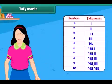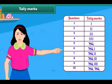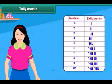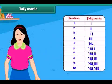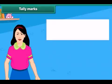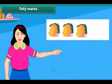For representing 2 objects, 2 vertical lines are drawn. Each mark represents an object. While representing 5 objects, 4 vertical lines are drawn and a 5th diagonal line cuts the 4 vertical lines. For example, to count 3 mangoes, we make 3 tally marks.